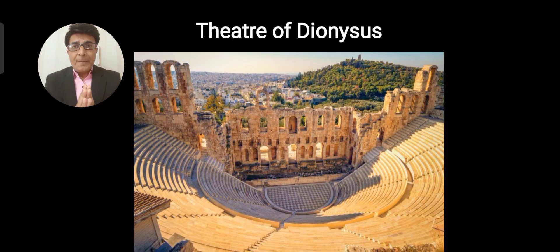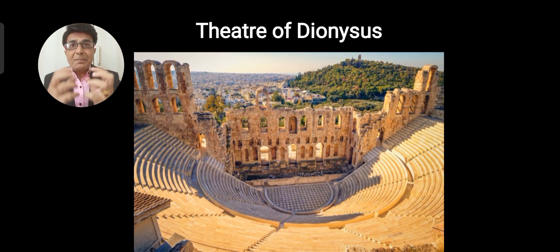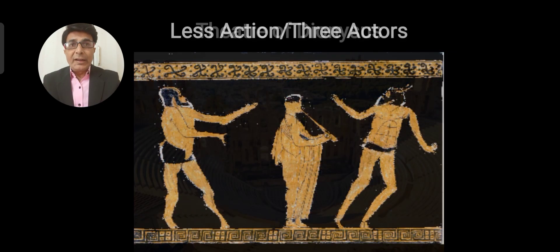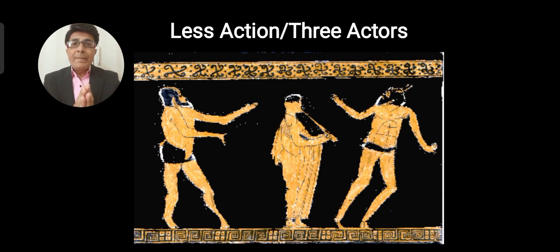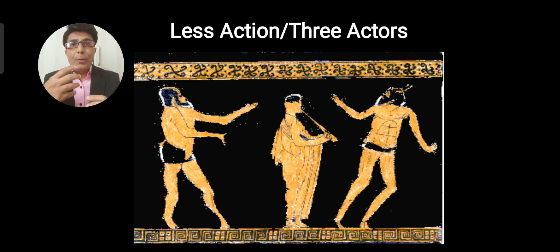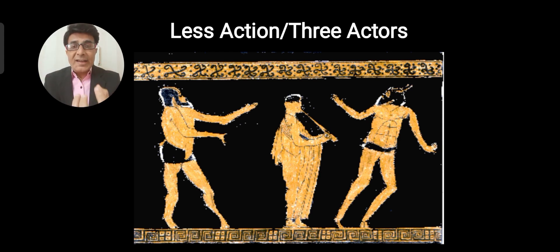This is the picture of the Theatre of Dionysus where these plays were performed publicly. Another important feature is that in the ancient Greek classical drama, there is less action and much of poetry. They were mostly poetic plays and poetry was recited by the characters standing on the stage.